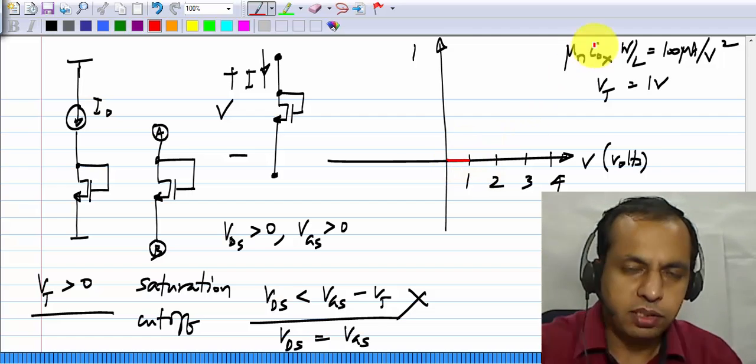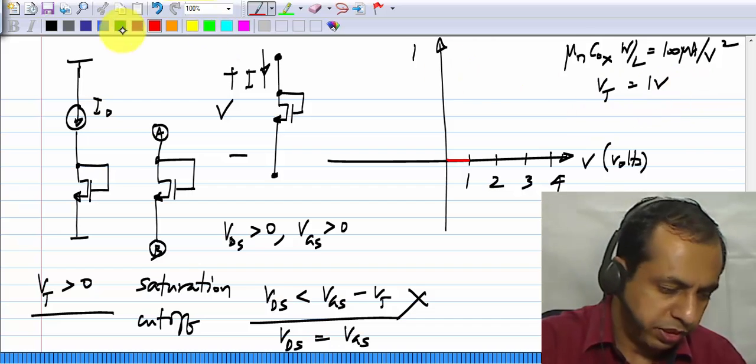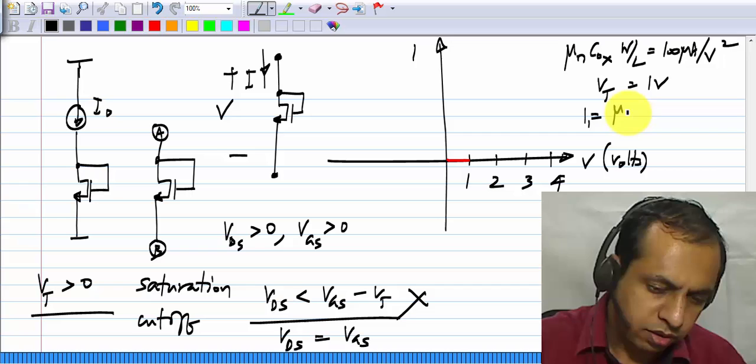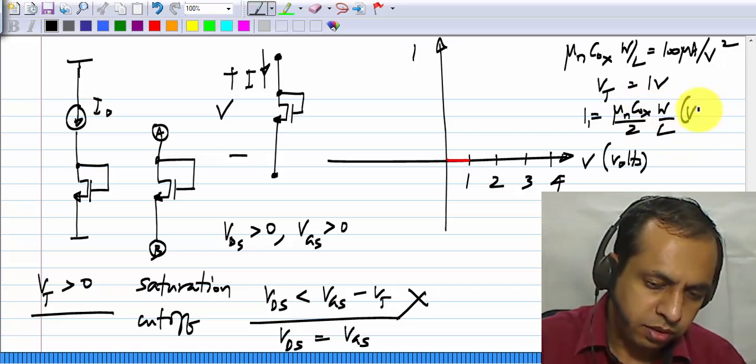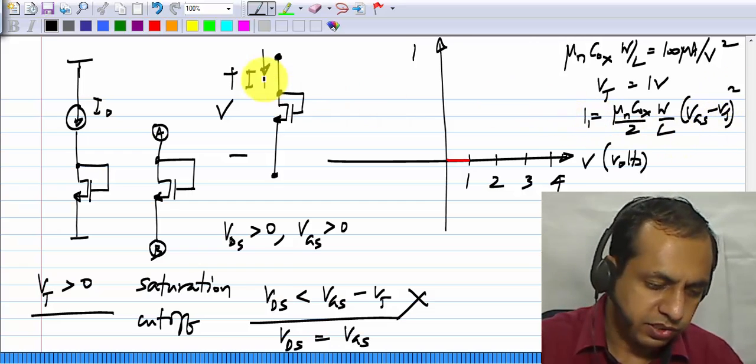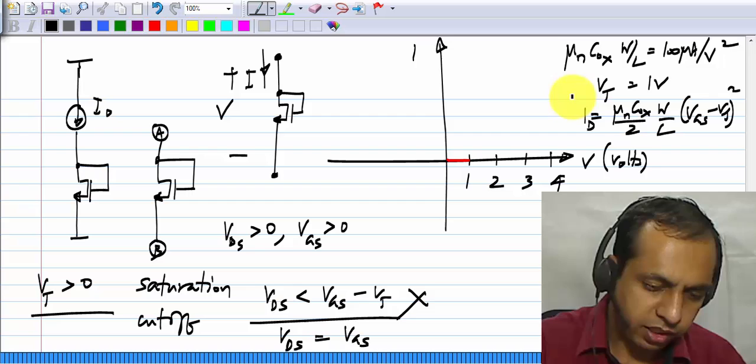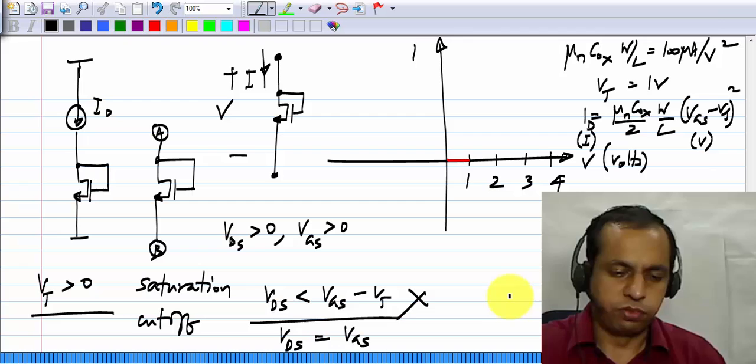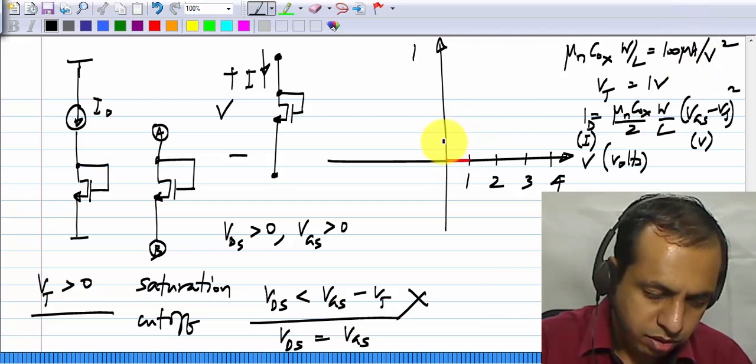And beyond that, because it is in saturation, it follows the square law equation, which says that I equals mu n C ox by 2 W by L times V g s minus V t square. In this case, I d is basically this current I, and V g s is this V. So, it follows the square law behavior.